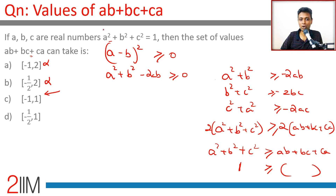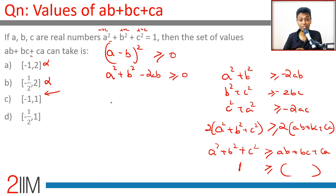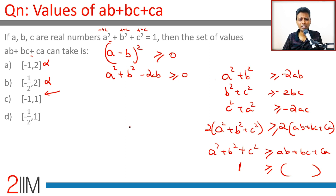If all three of a, b, c are negative, then ab + bc + ca would be positive. If all three are positive, it's also positive. If one is negative, say a is negative and b, c are positive, then a·b is negative, a·c is negative, but b·c is positive. So at least one of the three products can be positive, which offsets the negatives — the minimum might not go all the way to -1.